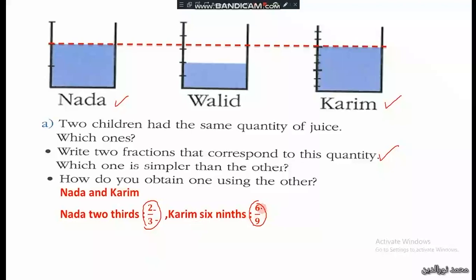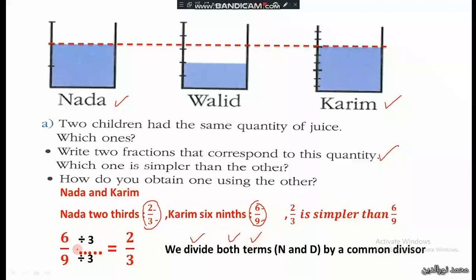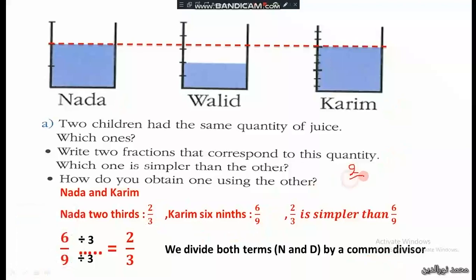Which fraction is simpler? We have 2 over 3 and 6 over 9. Since 2 and 3 are simpler numbers than 6 and 9, two thirds is simpler than six ninths. To go from 6 over 9 to 2 over 3, we divide both terms: 6 divided by 3 is 2, and 9 divided by 3 is 3. We divide both the numerator and denominator by a common divisor.